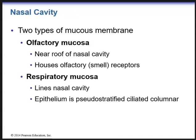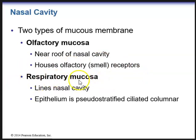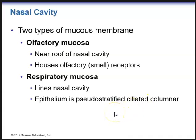Within the nasal cavity there are two types of mucous membranes. The olfactory mucosa is located near the roof of the nasal cavity — this is where smell or olfactory receptors are located. Another type is the respiratory mucosa, which lines the nasal cavity. Its epithelium, like most of the respiratory system, is made up of pseudostratified ciliated columnar epithelium. It looks like there are many layers, but in reality it's actually one layer — the nuclei of the cells are at different levels giving it a stratified appearance.